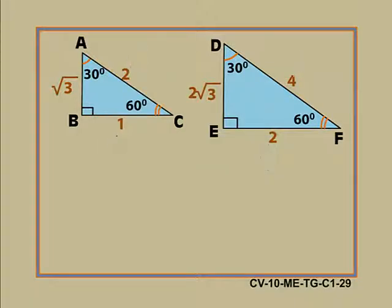AC and DF are hypotenuse. BC and EF are the sides opposite to 30 degrees in each triangle. Do you find any relationship?